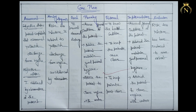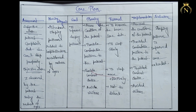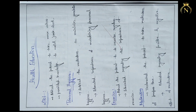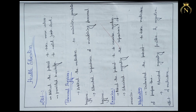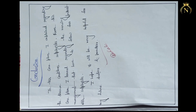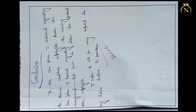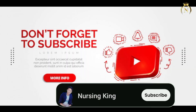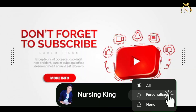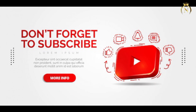After the care plans, you have to mention health education for the patient regarding diet, personal hygiene, and exercise. After that, write the conclusion, and at last you can mention the bibliography. I hope this video was helpful — please like and subscribe to my channel, thanks for watching.